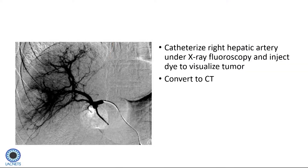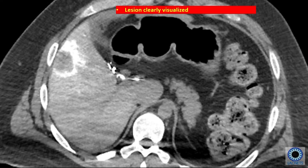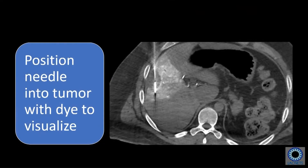So using this new technology, under x-ray we placed a catheter into the artery of the liver, then injected dye to visualize the tumor. When we switch over to the CT, you can see how obvious that lesion is now — very clearly visualized. You don't need to be a radiologist to say there's something abnormal there. Now we can position our needle directly into the tumor with dye being injected continuously to visualize it.